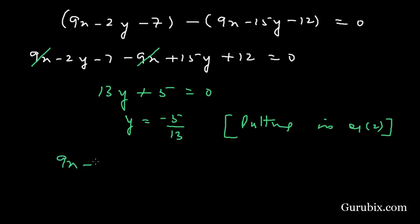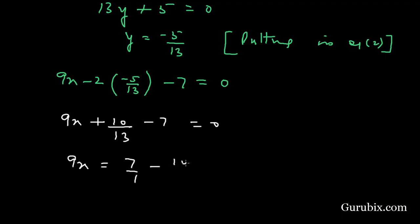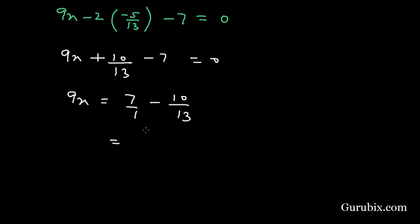Equation number 2 is 9x − 2y − 7 = 0. Substituting y = −5/13, we get 9x + 10/13 − 7 = 0. This means 9x = 7 − 10/13, which equals 91/13 − 10/13.